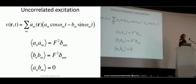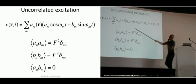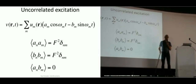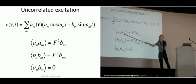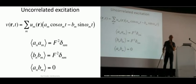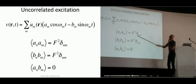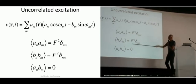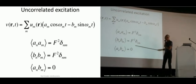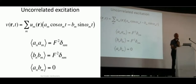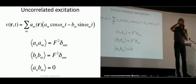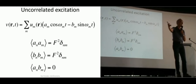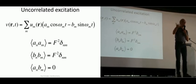Now we bring in randomness. We assume the coefficients describing mode excitation are random numbers generated by ambient noise, and that the excitation of different modes is uncorrelated — that's what the delta function describes. We assume the same for the cosine and sine coefficients, and also that the cosine and sine coefficients are mutually uncorrelated. So every mode is excited in an uncorrelated way with every other mode, and every mode is excited with the same strength. That is called equipartitioning — the energy is distributed evenly among all the modes.